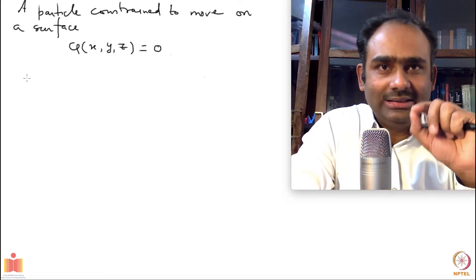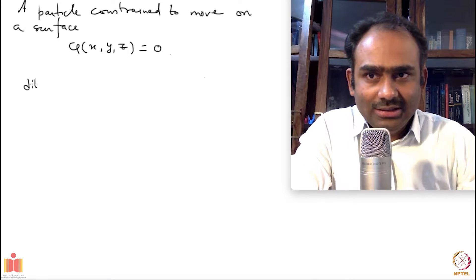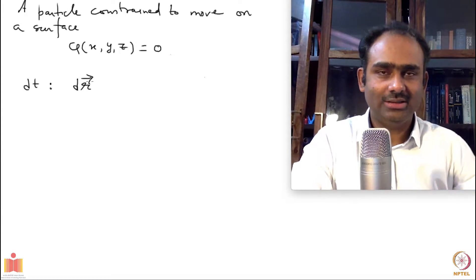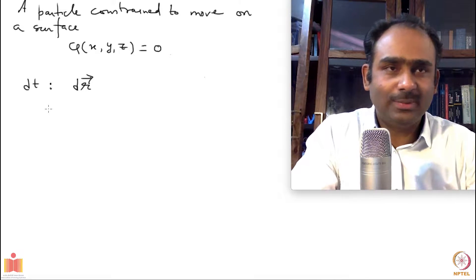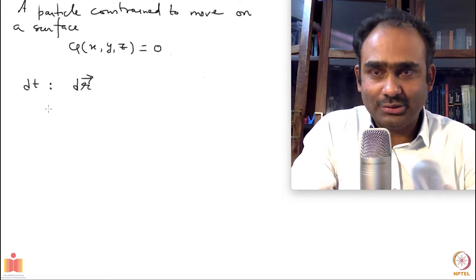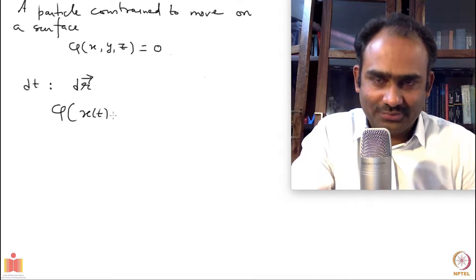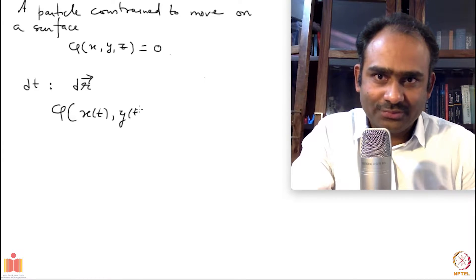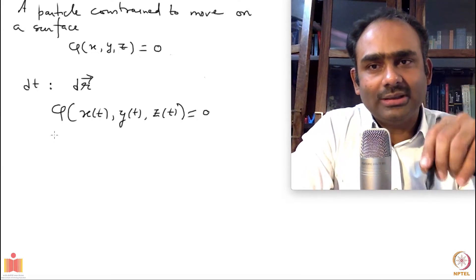In some time interval dt the particle gets displaced by an amount dr, and that displacement has to be on the surface. So how are the displacements dx, dy, and dz constrained? They have to be related to each other so that the particle stays on the surface. Since the particle's coordinates at every point of time t must satisfy φ = 0, if we take the total time derivative of φ, that has to be 0.